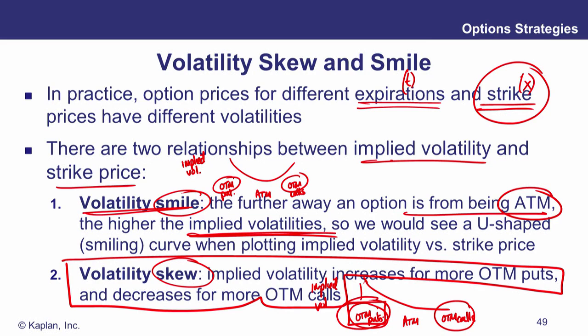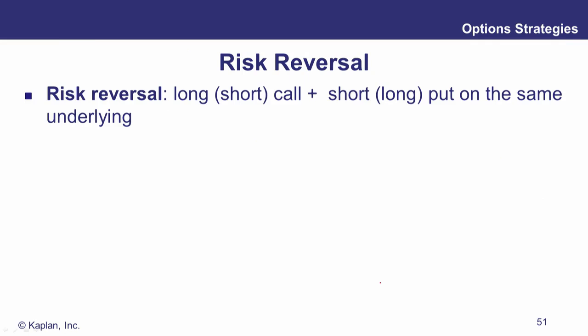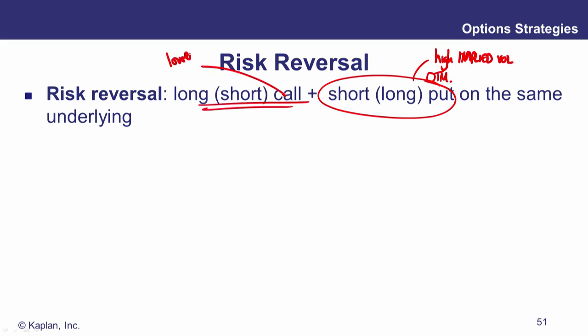With the volatility skew, out-the-money puts have high implied volatility. So what do we do with high implied volatility? We sell it. So maybe we'll sell out-the-money puts, which have high implied volatility. And to play this relative value, we're going to buy an option with lower implied volatility — we'll buy a call that has lower implied volatility. So that would be taking advantage of the volatility skew: selling high volatility, buying lower volatility. This is called a risk reversal. It gets its name from currency markets because this trade is often used to reverse currency risk.